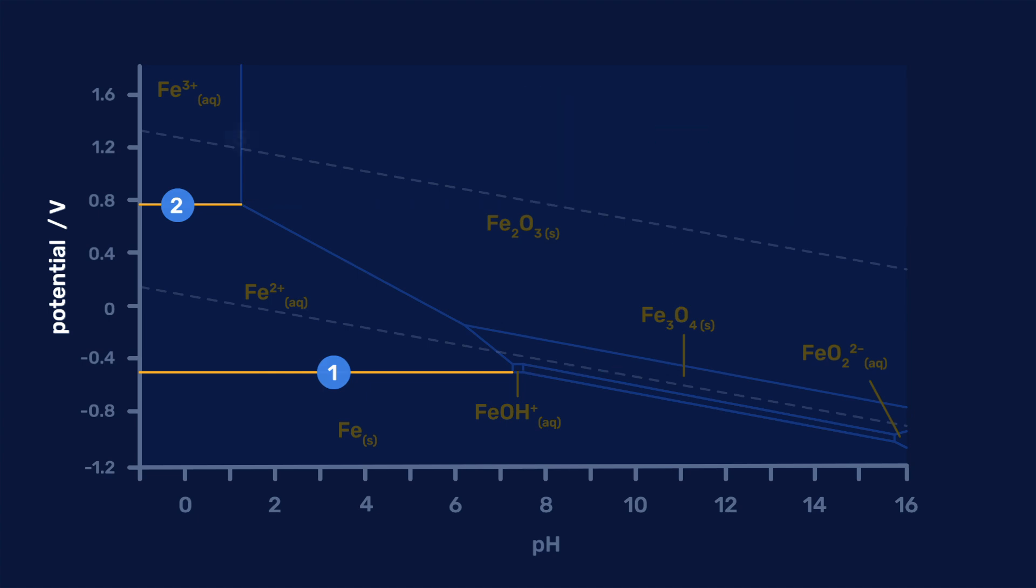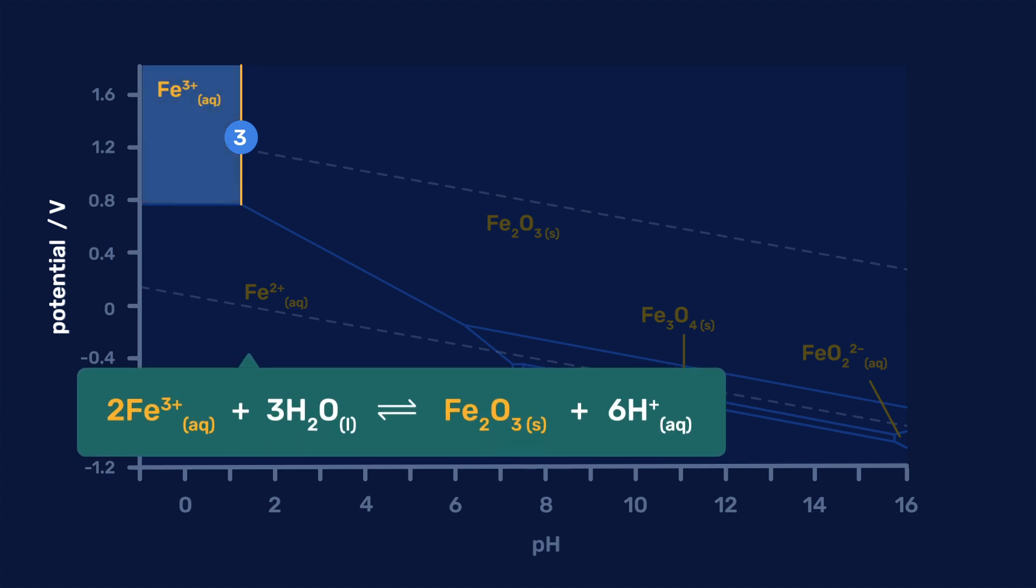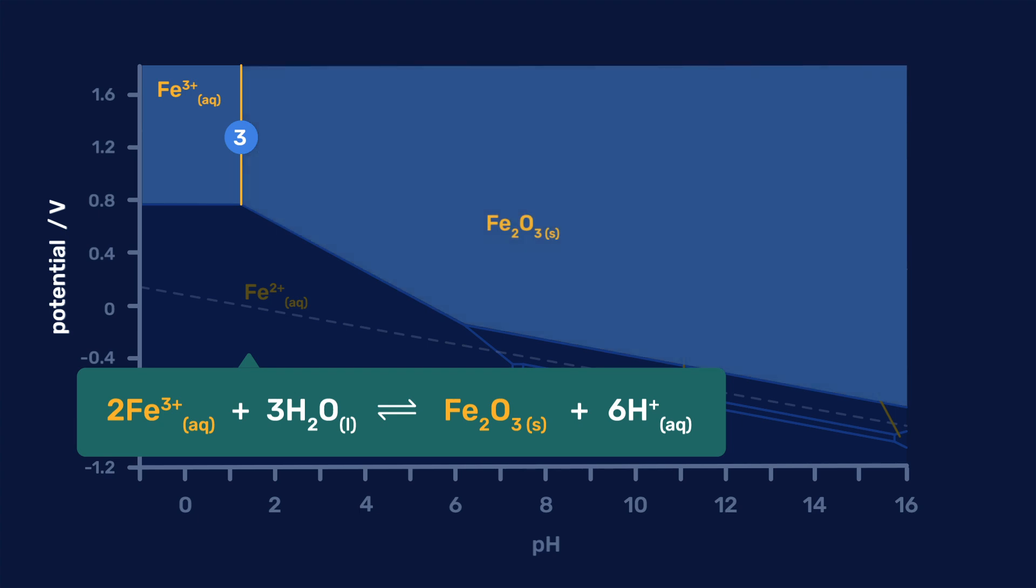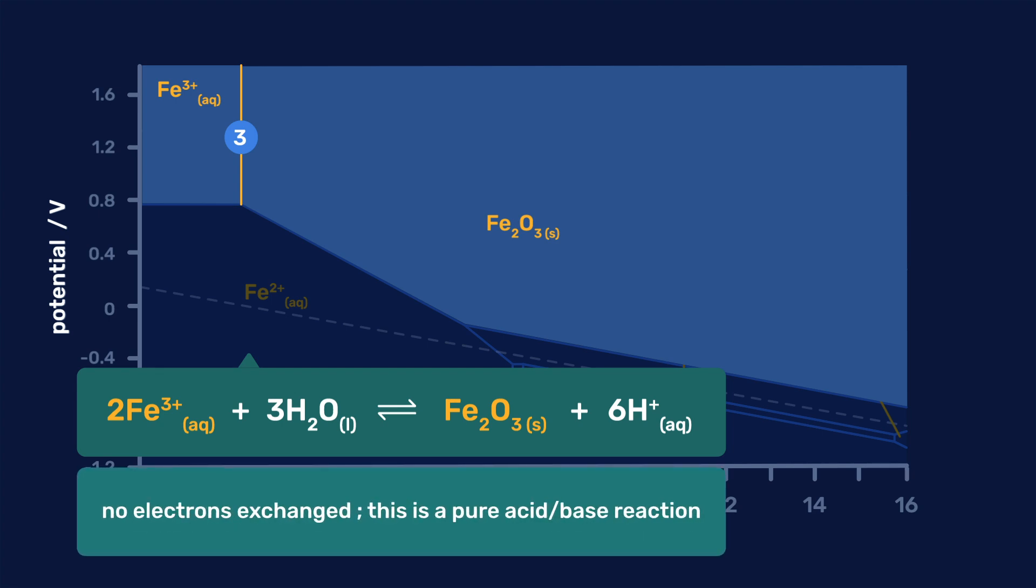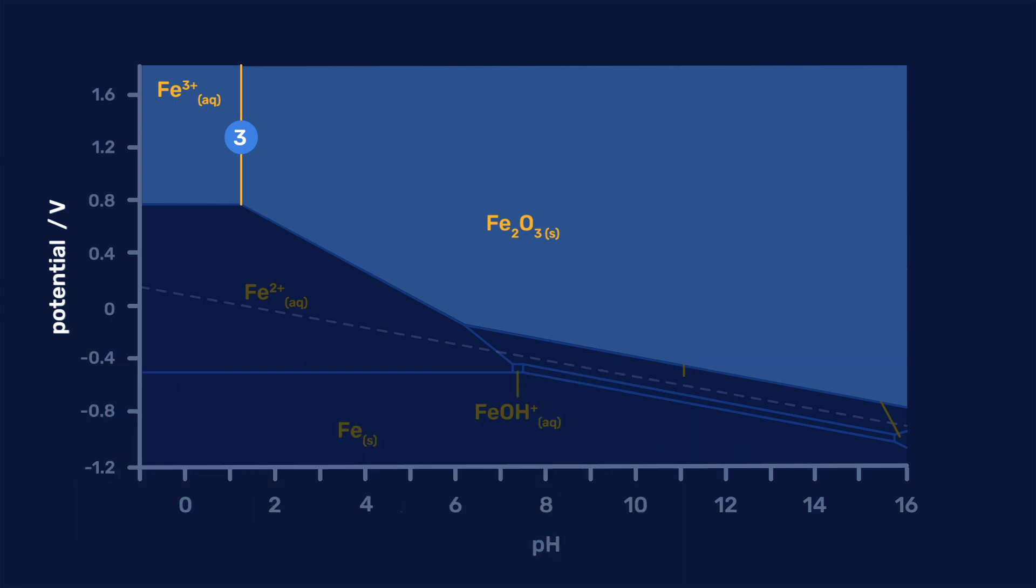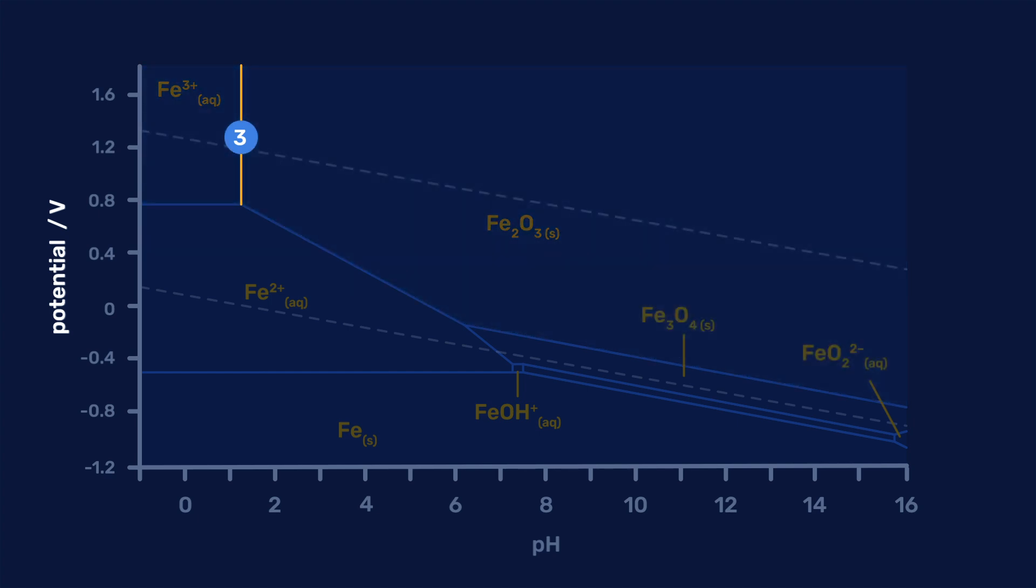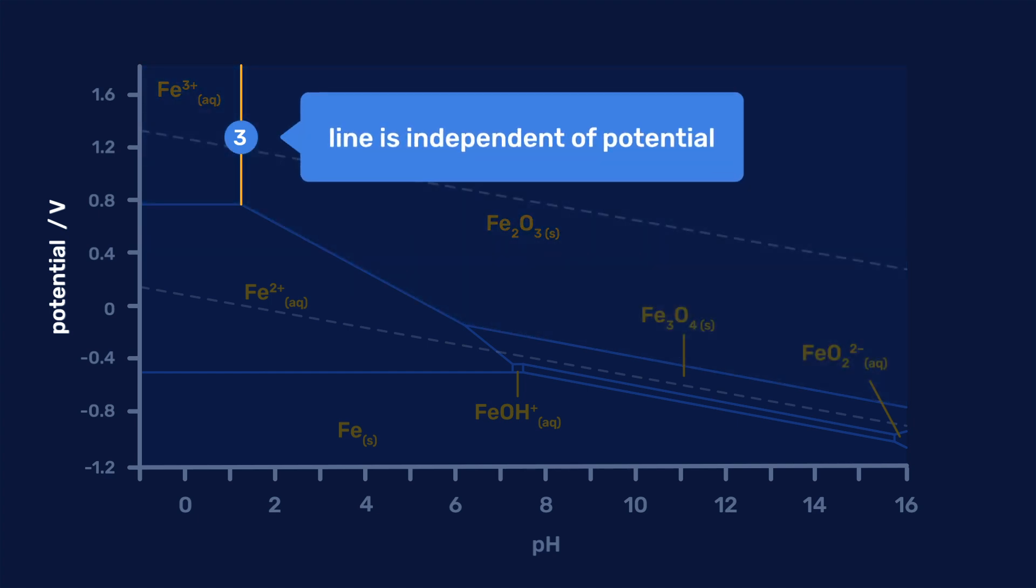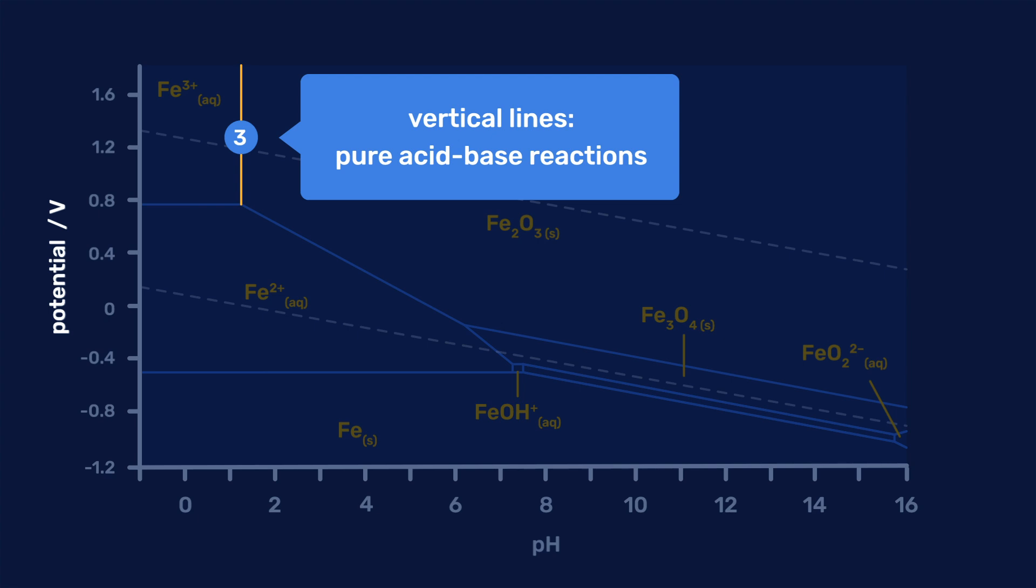The line indicated by number 3 represents the equilibrium between iron 3 plus ions and the iron 3 oxide Fe2O3. The oxidation number of iron does not change, and this reaction is an acid-base one. It is therefore represented by a line that does not depend on the potential and is vertical.